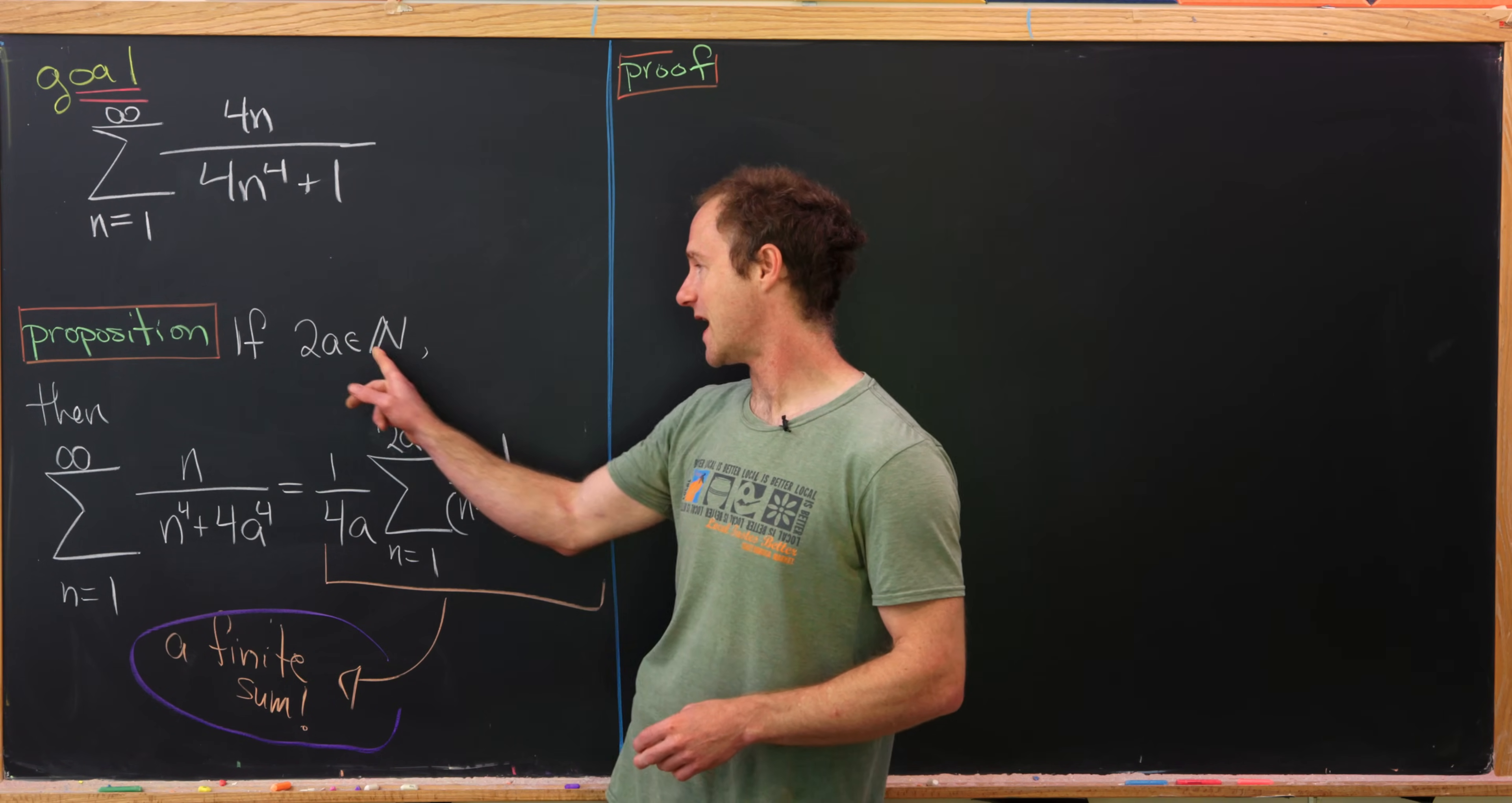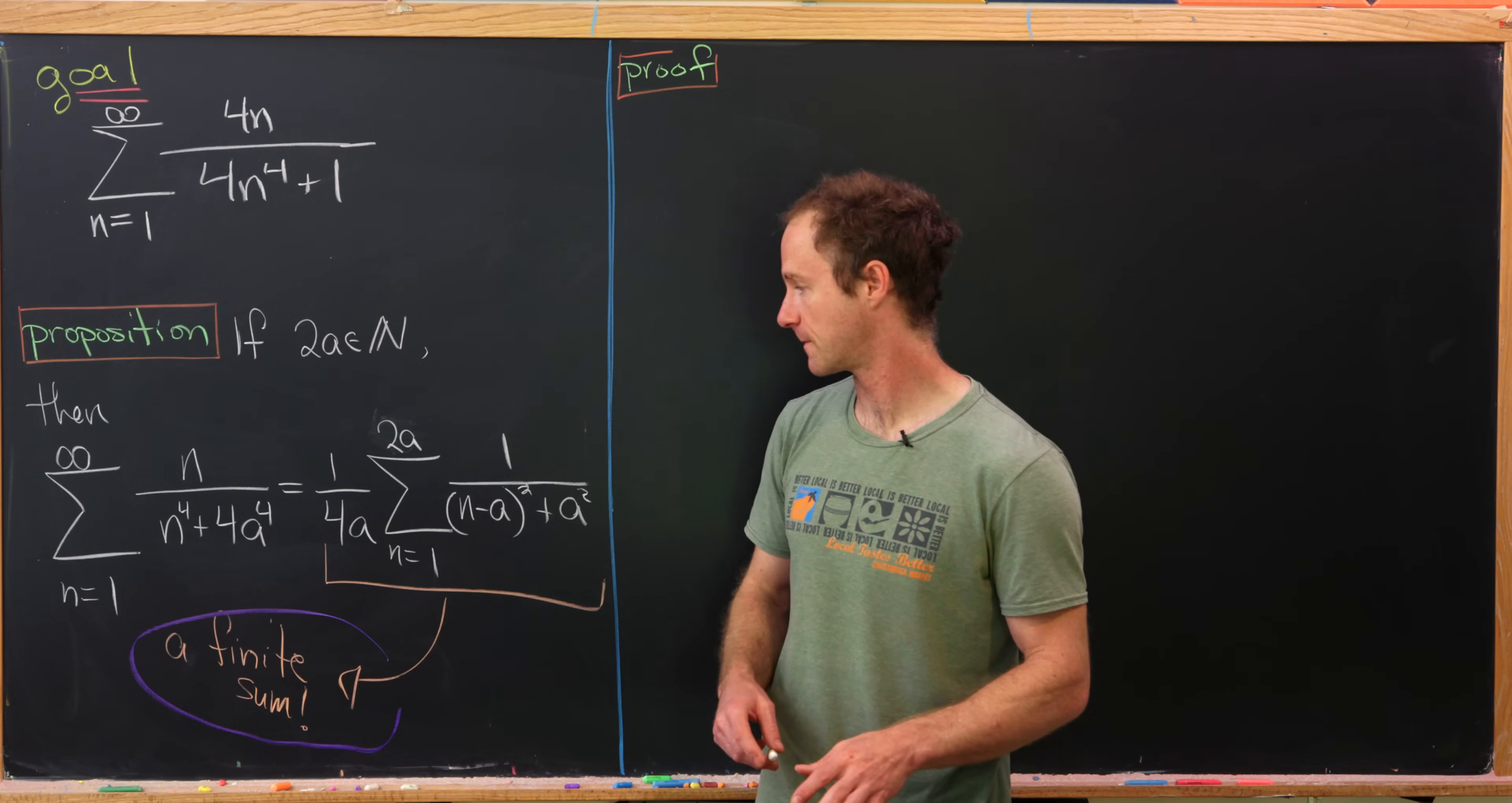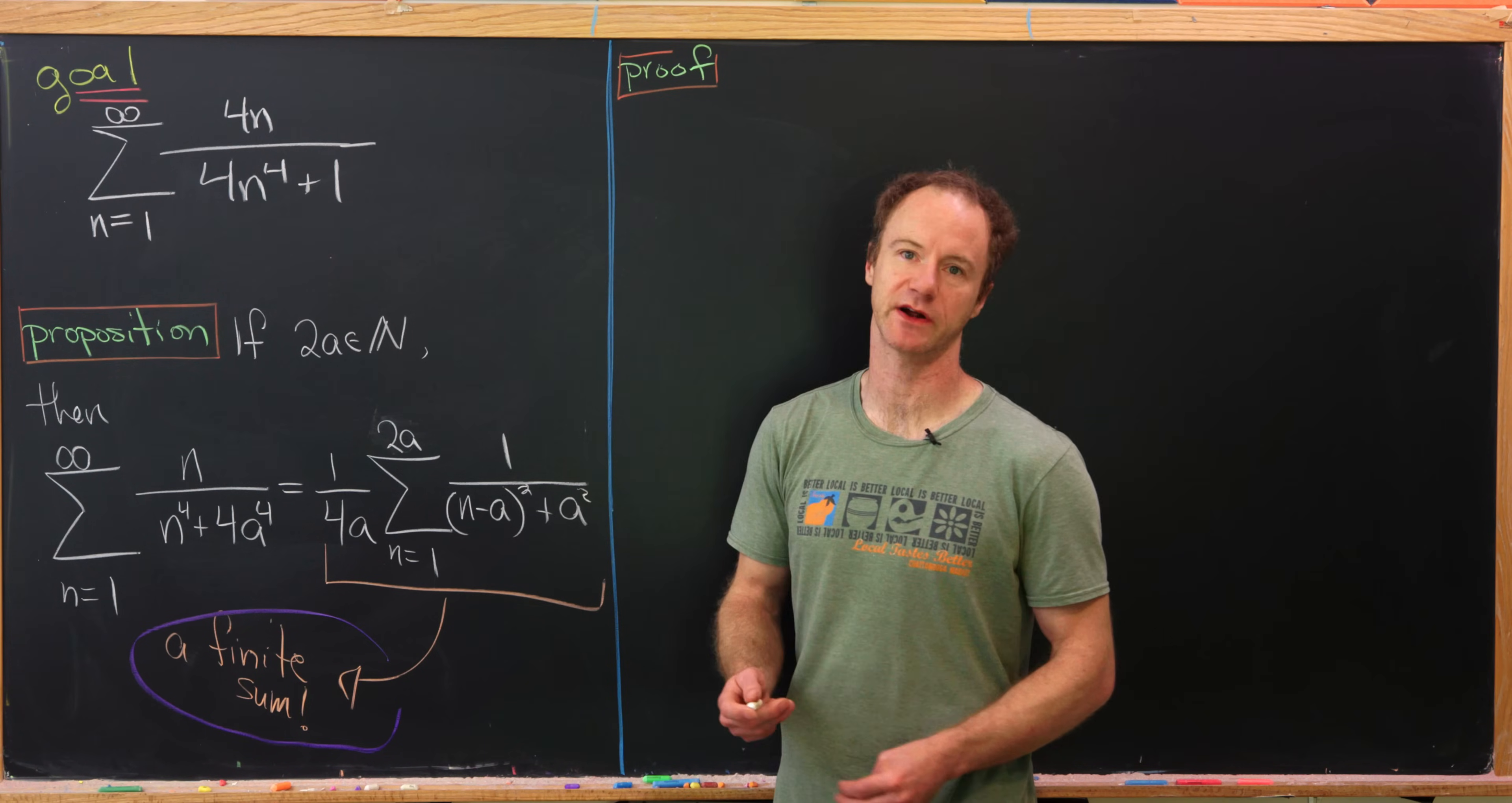So if 2a is a natural number, in other words a positive integer, then the sum as n goes from 1 to infinity of n over n to the 4th plus 4a to the 4th is equal to 1 over 4a times the sum as n goes from 1 to 2a of 1 over n minus a squared plus a squared.